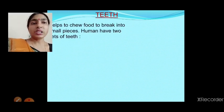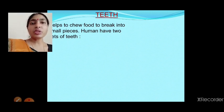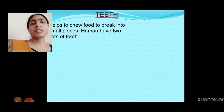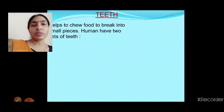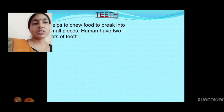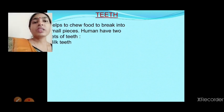Teeth help to chew and break down food into small pieces. Human beings have two sets of teeth. The first set comes in young age — at about six months it starts growing, and at six years it starts to fall out and we get new permanent teeth. The first set is called milk teeth, and then we get permanent teeth.